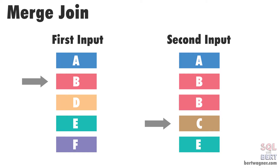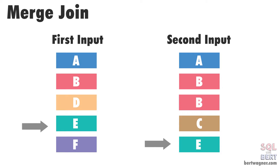SQL Server increments the row of whichever input has the smaller value. It then continues performing comparisons and outputting any joined records. And it keeps doing this kind of going back and forth down a little bit at a time until it gets through both inputs and there's no more rows of data to compare and join together.